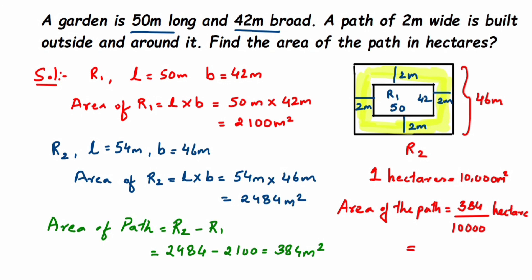Since there are four zeros in the denominator, write the number 384 and place the decimal four digits from the right. There are only three digits, so add a zero before and place the decimal — giving 0.0384 hectares. I hope it's clear how we solved this. If you have any further questions or doubts, you can drop a comment below. Thank you so much for watching.